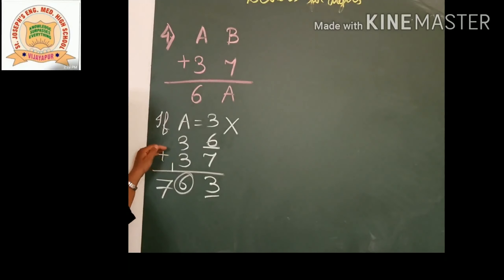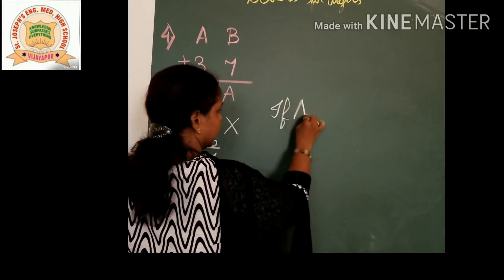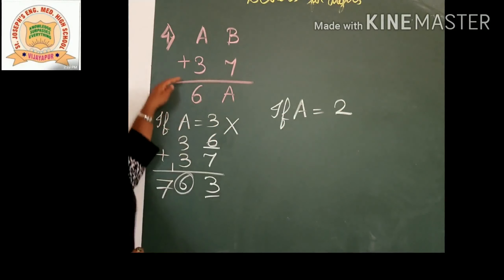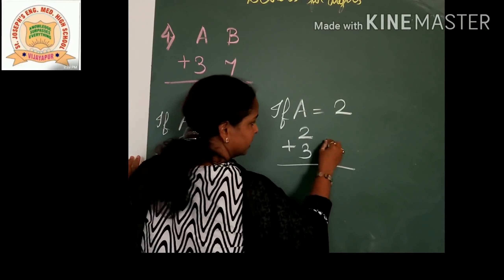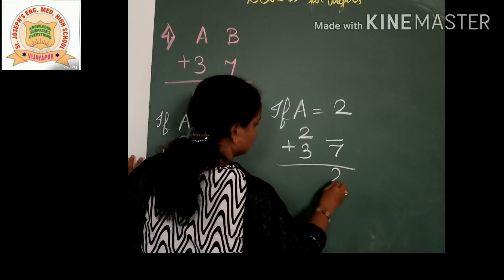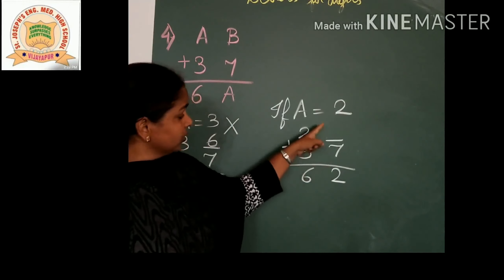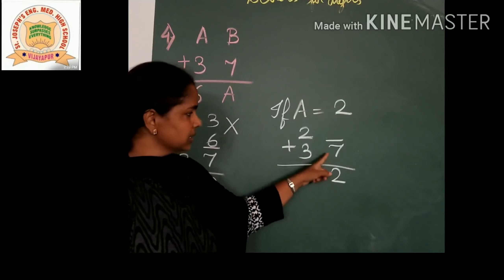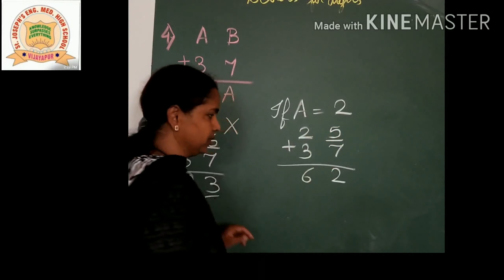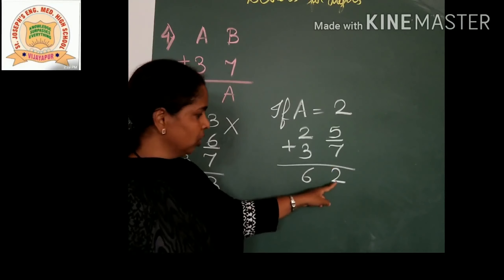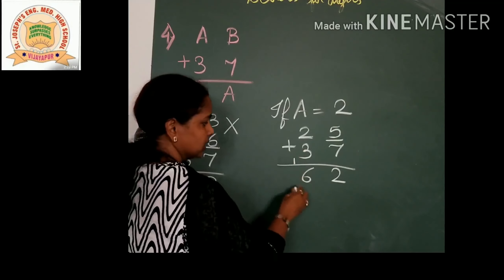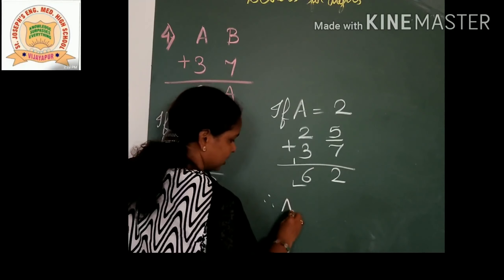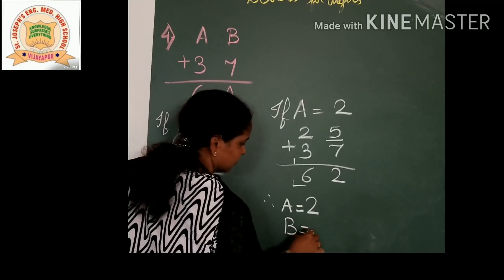Next, consider A smaller than 3, that is A equal to 2. Wherever A, substitute with 2. Then 2 plus 3 gives the hundreds digit 6. In the tens place, what we add to 7 to get 2 in the unit place is 5, since 5 plus 7 equals 12 — unit place 2, carry 1. Then 2 plus 3 plus 1 carry equals 6. Therefore the possible value of A is 2 and B is 5.